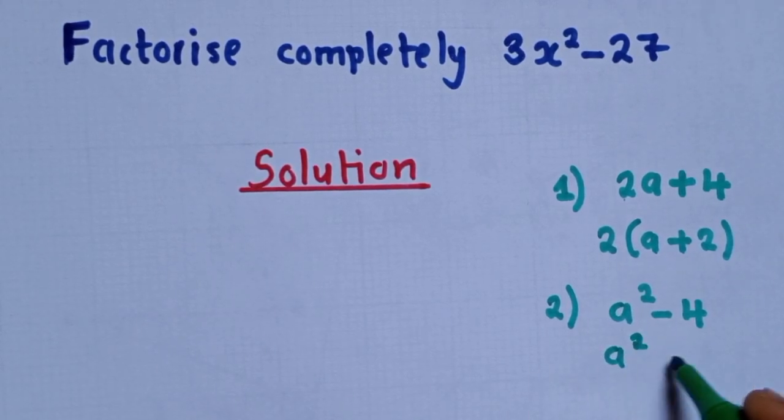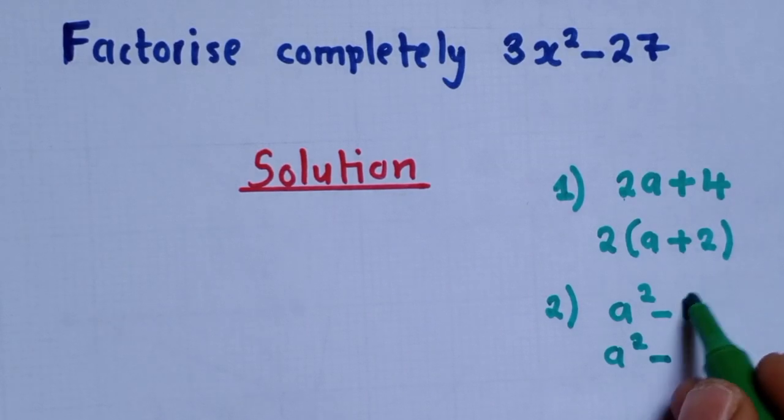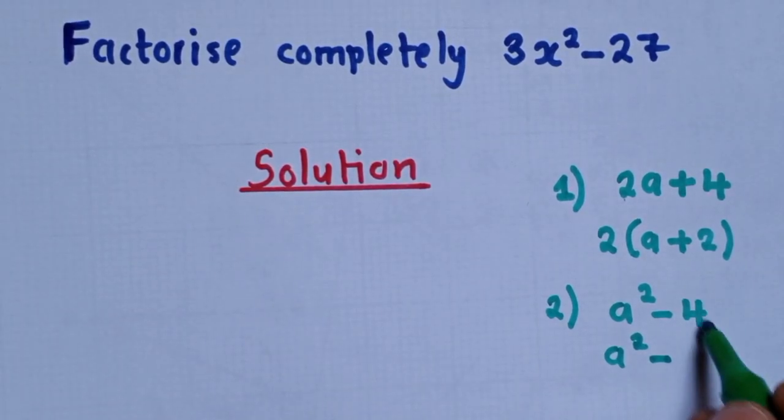So this thing will be like this. a power 2 minus, you find the square root of whatever value is here. In this case it's 4. What is the square root of 4? It's 2. So you write it as 2 power 2.